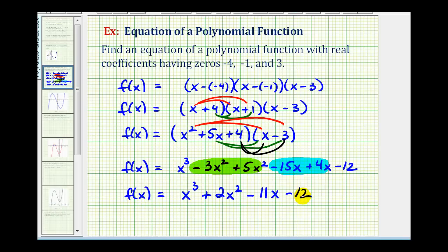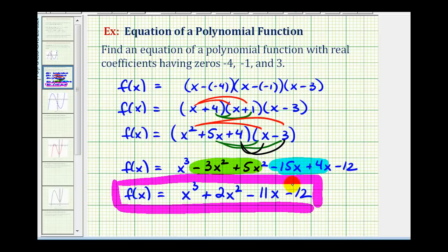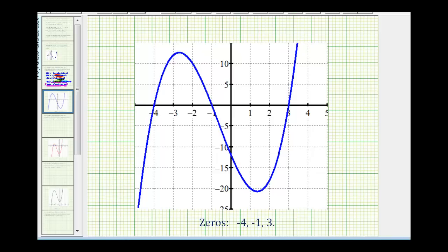So again, this polynomial function, which is also a cubic function because it's degree 3, would have the real zeros of negative 4, negative 1, and positive 3. And to verify this, since these are real zeros, we can graph this function and verify these would be the x-intercepts of the graph. So here's the graph of the function that we just found. Notice how we have an x-intercept of negative 4, negative 1, and positive 3, which verifies our work. Okay, I hope you found this helpful.